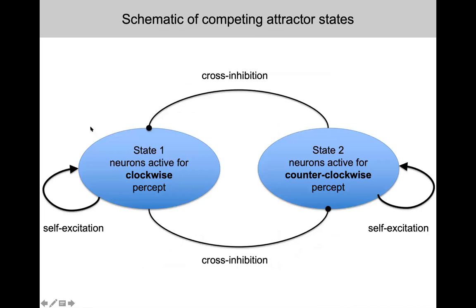When we have these different percepts, the activity — meaning the rate of spiking of different neurons — is changing. Some neurons are more active for one percept versus the other. We only see one percept at a time, similarly to how we can only do one motor pattern at a time, so there must be cross-inhibition: when one population is active, it suppresses the other. Self-excitation means that neurons corresponding to one percept give each other enough excitation to maintain it, since without input, neurons become silent after a short time.